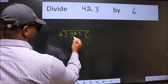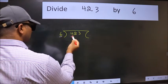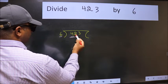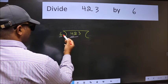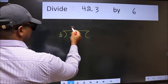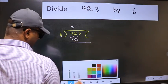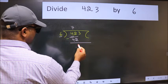Here we have 4 and here 6. 4 is smaller than 6. So take 2 numbers, 42. When do we get 42 in 6 table? 6 times 7, 42. Now we should subtract. We get 0.